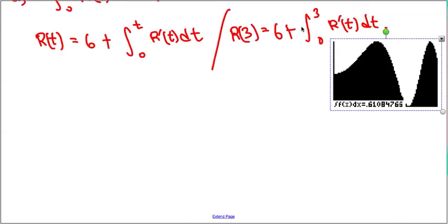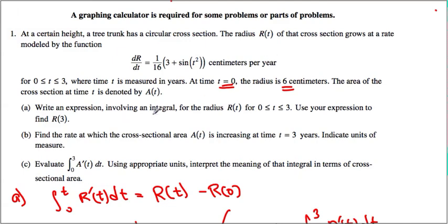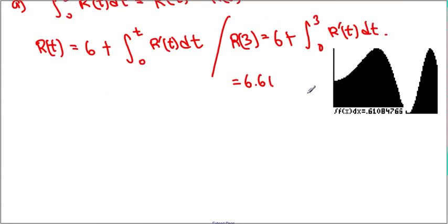and that's the value that we end up getting. So, therefore, our answer would have been 6.61, and continues on this way. There would be the radius. And in this case, it would be centimeters.